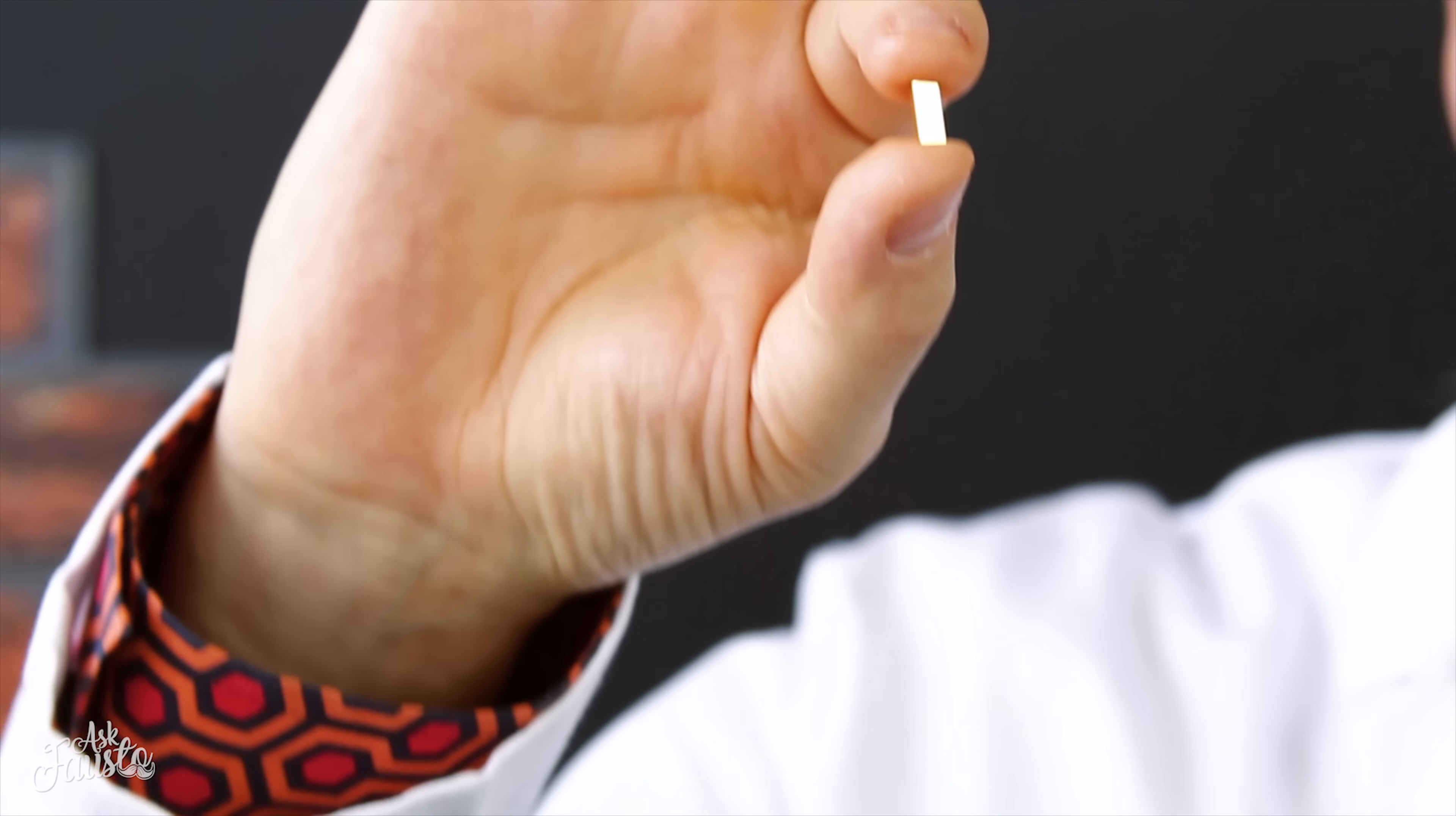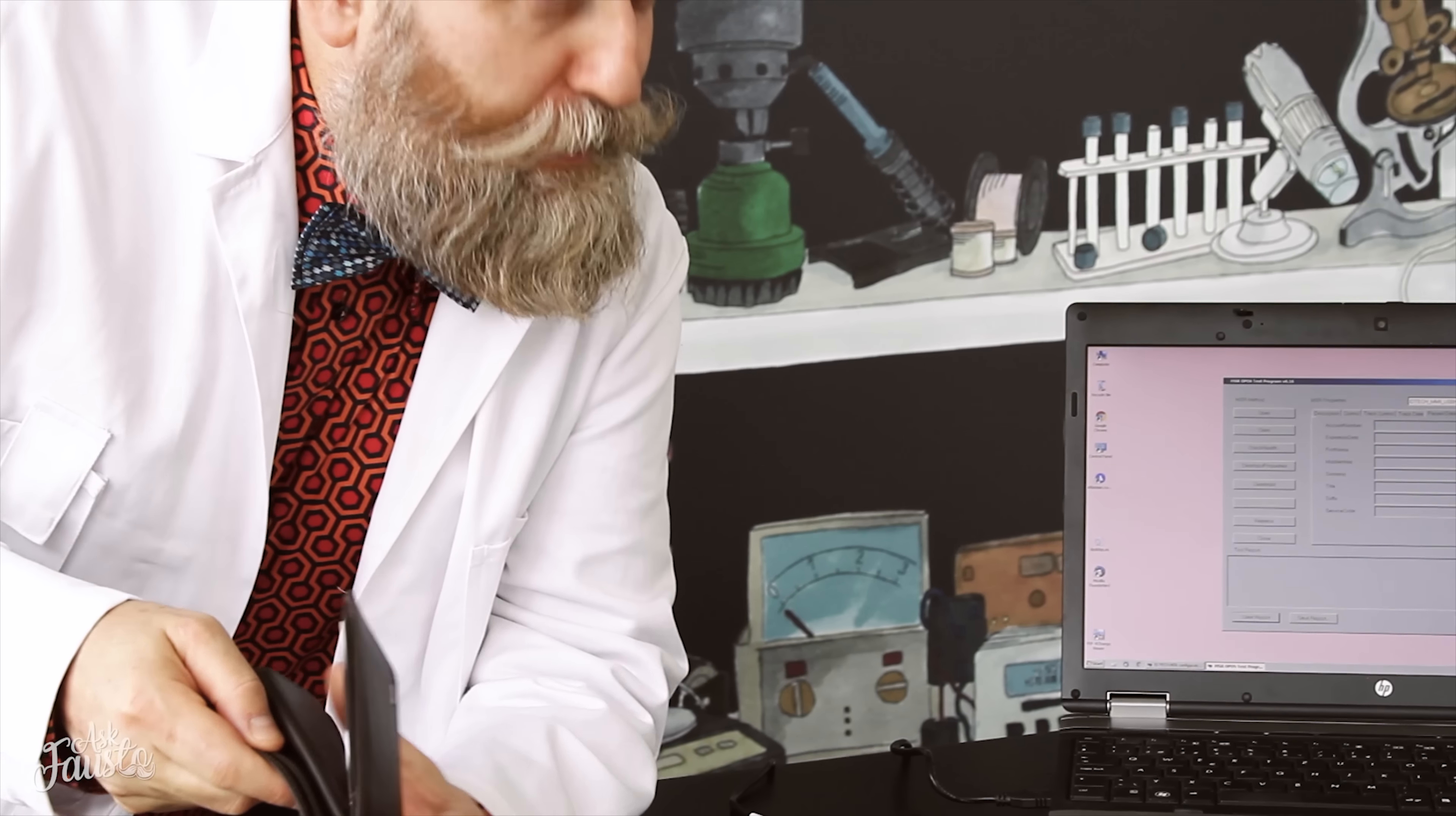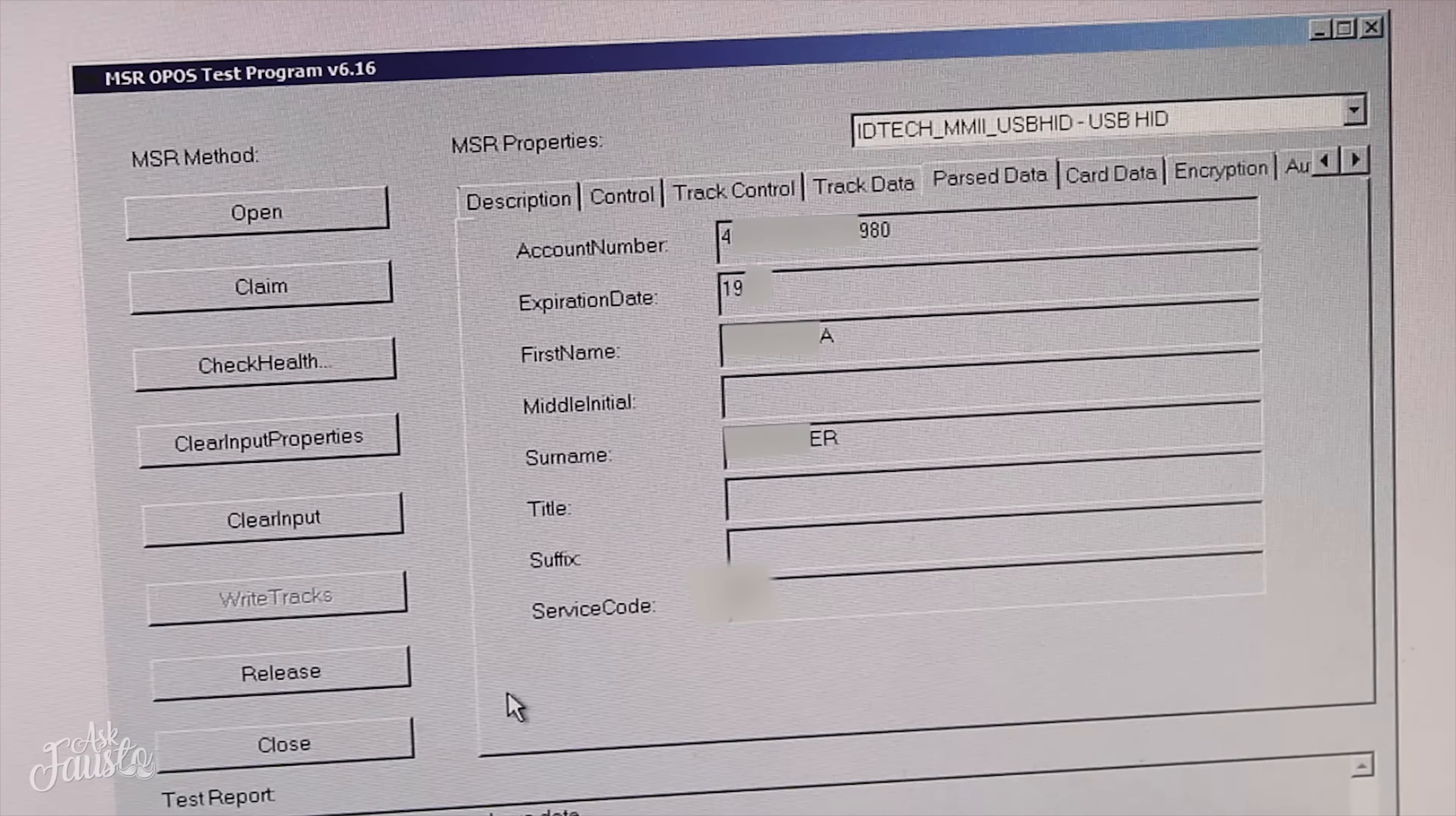In a conventional wallet, this small magnet has no effect on either card. This magnet is about the same size as one that is built into smartphone cases. Now let's see if any data was erased.